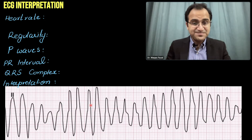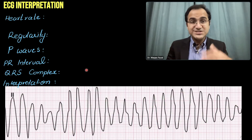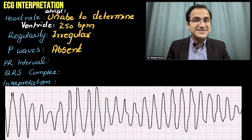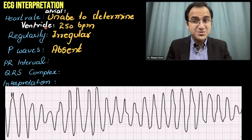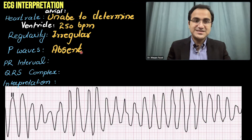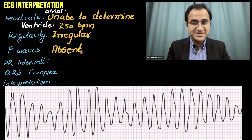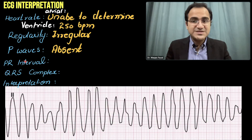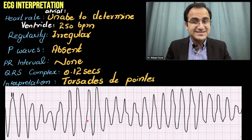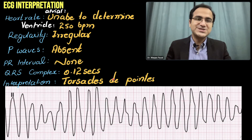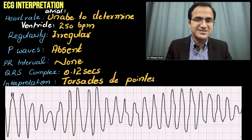This is another ECG of torsades — these are the pointed ends and these are the round ends. The atrial rate is unable to be determined as there are no P waves. The ventricular rate is 250 beats per minute, calculated by the six-second method. P waves are absent, PR interval is none, QRS complex is wide, and the interpretation is torsades de pointes.